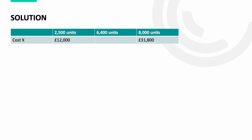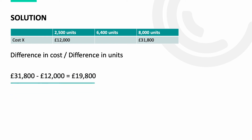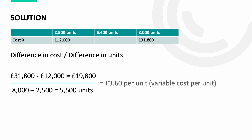Following the same steps as before: difference in cost divided by difference in units. £31,800 minus £12,000 gives a difference of £19,800. Then 8,000 units minus 2,500 units gives 5,500 units. Dividing £19,800 by 5,500 units gives a variable cost per unit of £3.60.